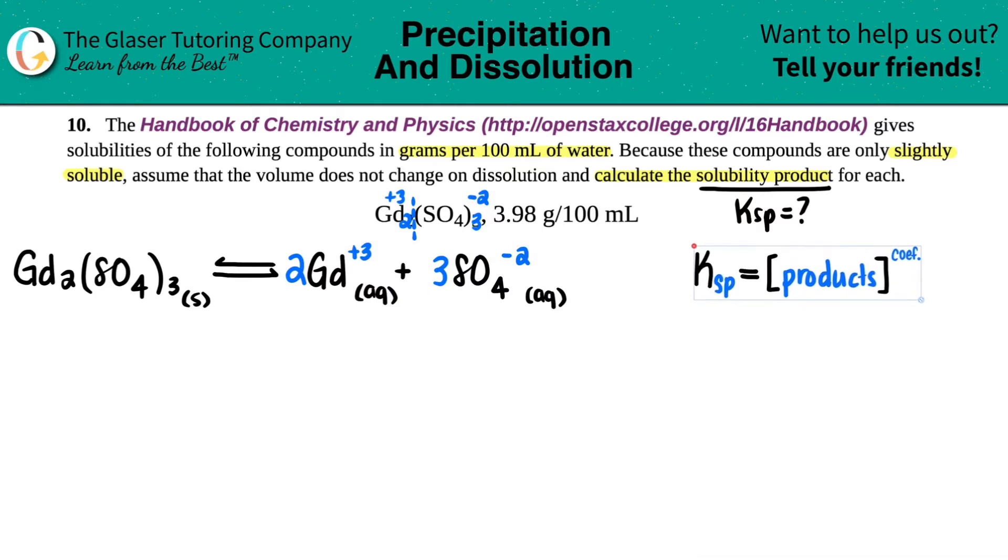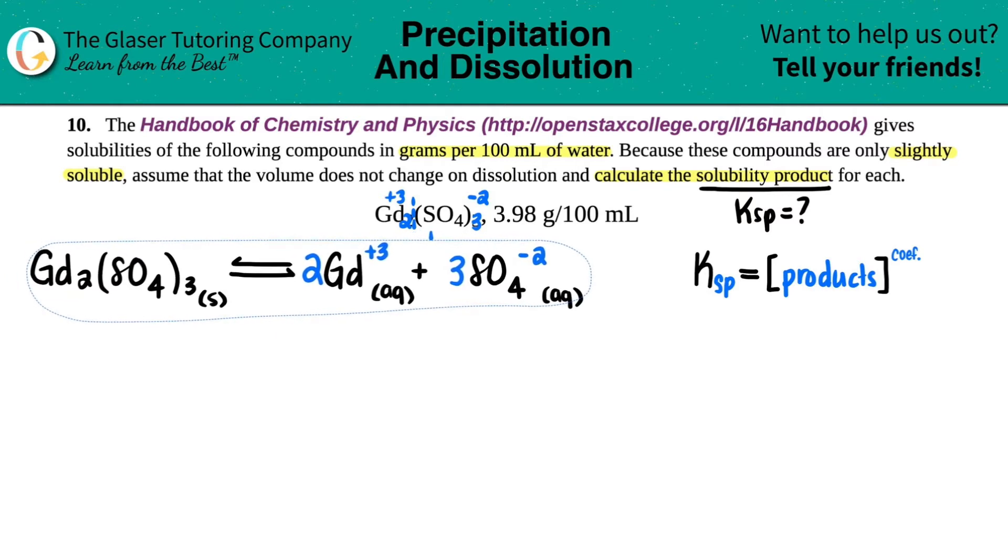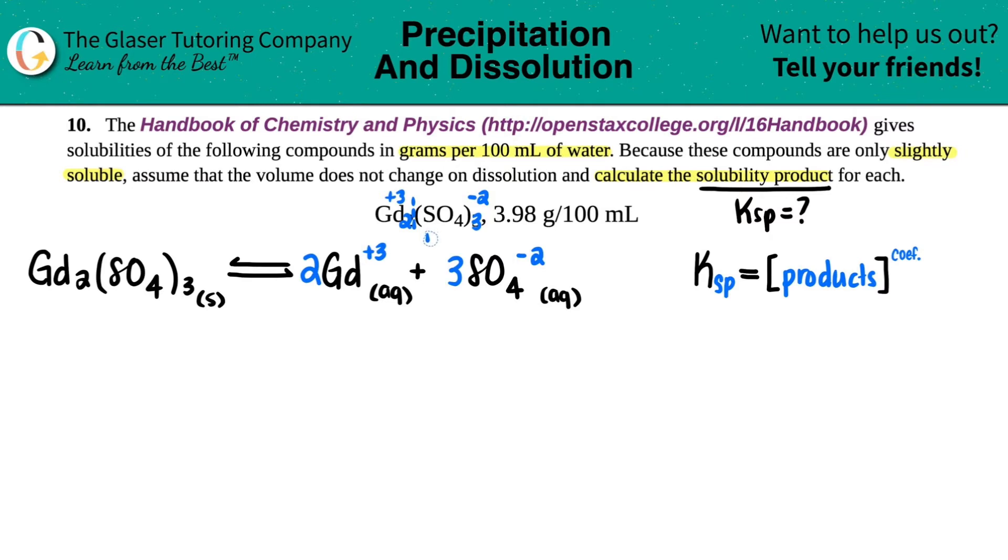It's the Ksp equals just the concentration of the products. Because remember, technically it should be over reactants. But for Ksps, you're always starting off with a solid and no solids allowed. And let me just maybe bring this a little bit more over because I want to do something later.